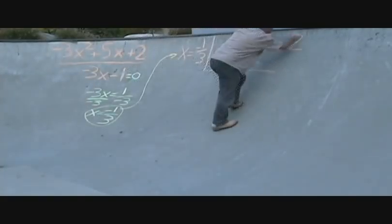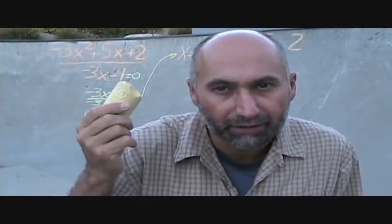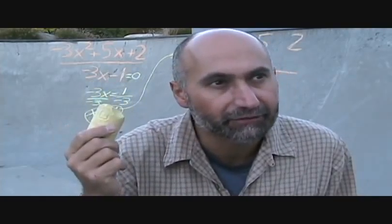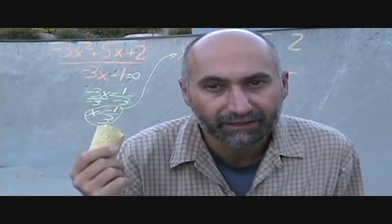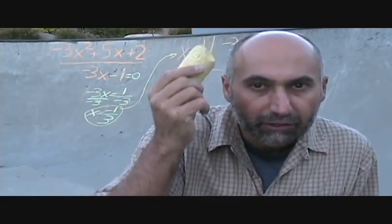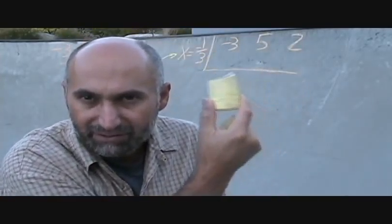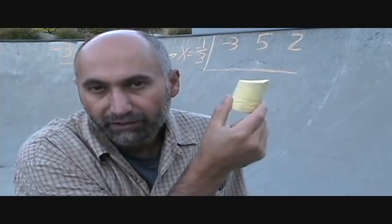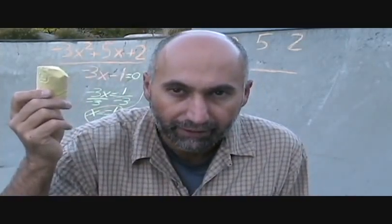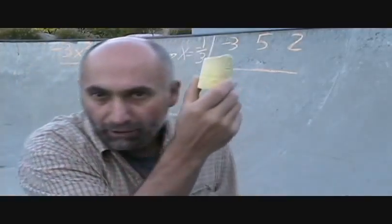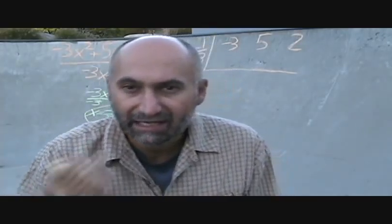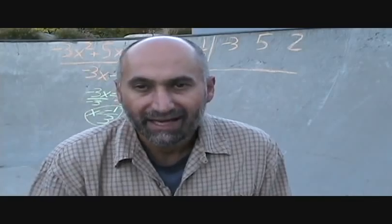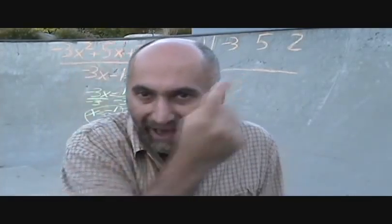Set negative 3X minus 1 equal to zero, bring the 1 over and divide by negative 3, so X equals negative 1 over 3. Move this value up to the left side of your upside-down division box — that's your synthetic division statement. Take all the numbers from the numerator and lay them down, keeping in mind that the sign in front of each number always goes with the number.